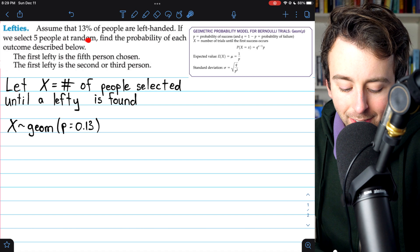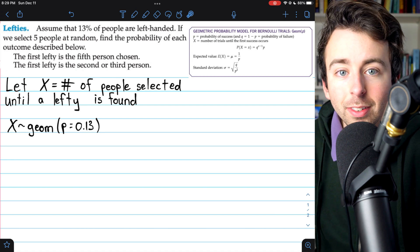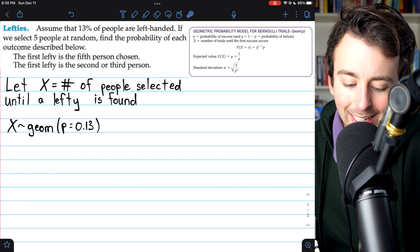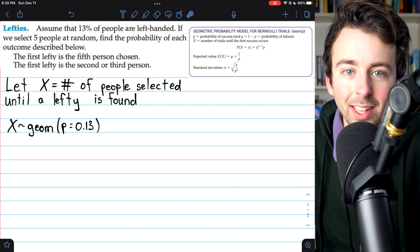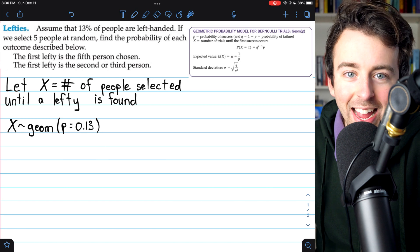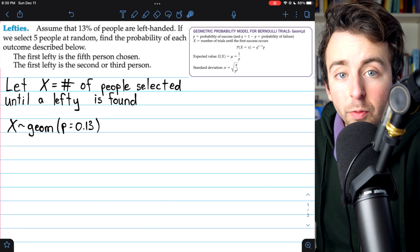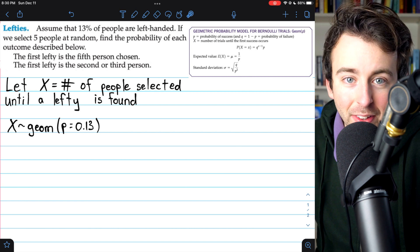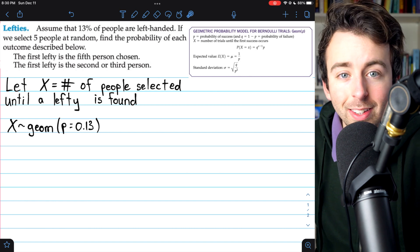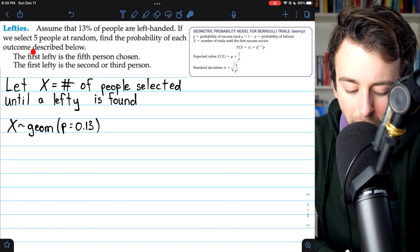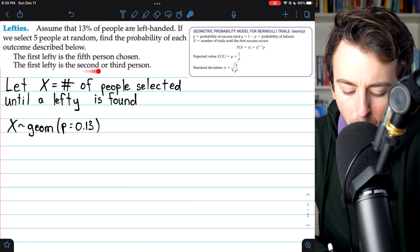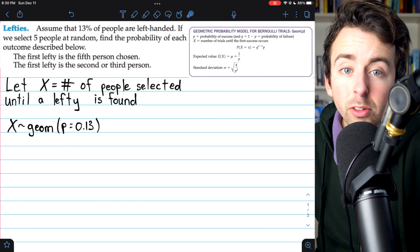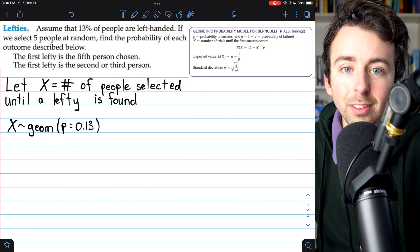We are randomly selecting people. Each time we select someone, there's a 13% chance that person will be left-handed and there's no reason to believe that the left-handedness or right-handedness of one person would affect the likelihood that the next person we randomly select is left-handed or not. Safe to assume that these trials are independent and we are answering questions about how many people we will have to choose until we get a lefty. So for sure a geometric model is appropriate.